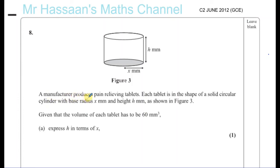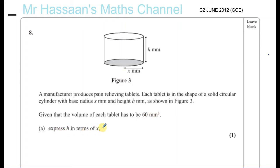A manufacturer produces pain-relieving tablets. Each tablet is in the shape of a solid circular cylinder with a base X centimetres and a height H millimetres as shown in figure 3. Given that the volume of each tablet has to be 60 millimetres cubed, express H in terms of X.